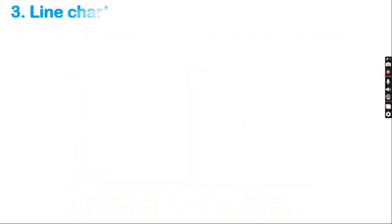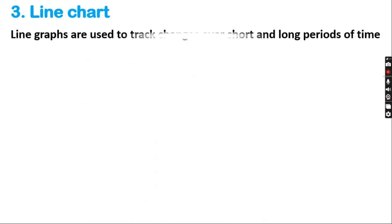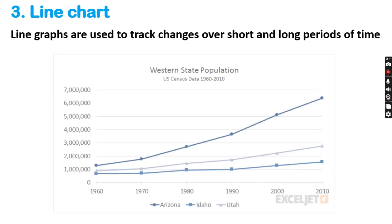Number 3: Line chart. Line charts or line graphs are used to track changes over a short or long period of time. In this example, we can see the changes in the population over a period of time from 1960 to 2010.